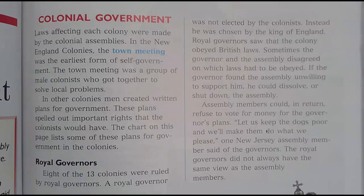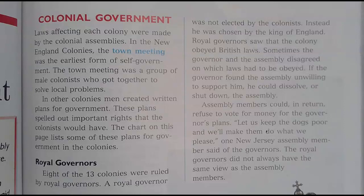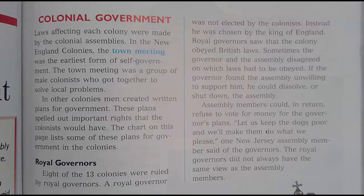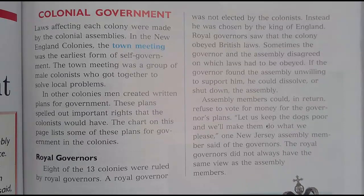Laws affecting each colony were made by colonial assemblies. In the New England colonies, the town meeting was the earliest form of self-government. The town meeting was a group of male colonists who got together to solve local problems. Have you noticed the theme? People that get to vote are males, people that are solving problems are males. And most of it's male landowners.